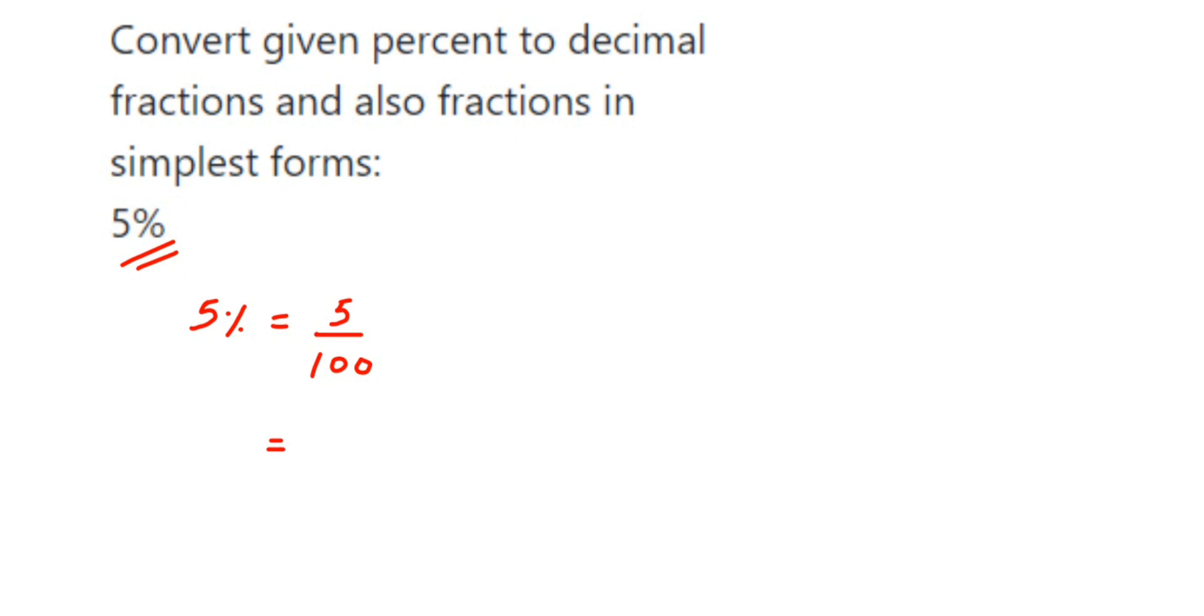To simplify, cancel the numbers. The simplest form is the lowest form, so 5 ones are 5, 20s are 100, so 1 upon 20 is the simplest form. But they are also asking us to convert into decimal form.